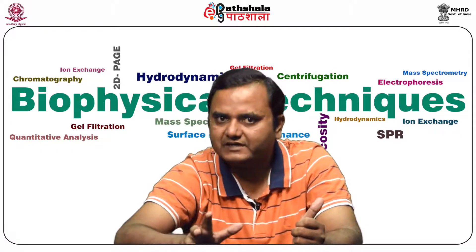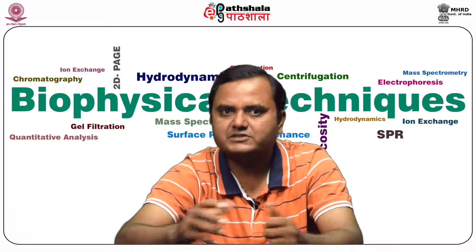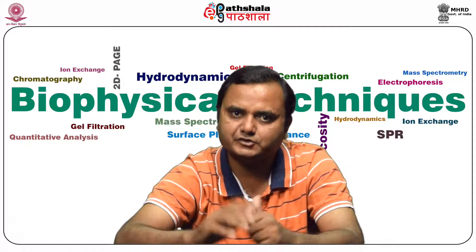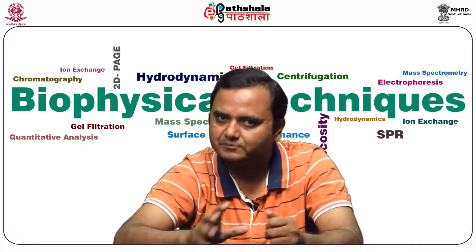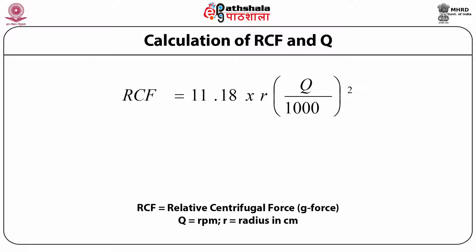Stokes' law clearly verifies the mathematical expression of molecule behavior during centrifugation and what factors affect separation. There is also a conversion between RCF and RPM: RCF = 11.18 × R × (RPM/1000)². To convert RCF to RPM, the equation is: RPM = 299 × √(RCF / R). These two equations are used for interconversion between RCF and RPM.